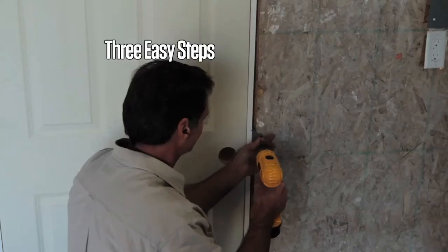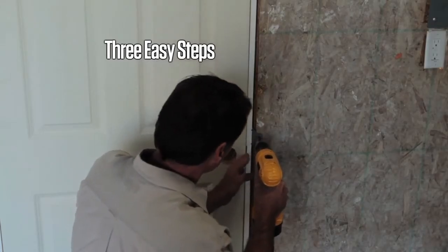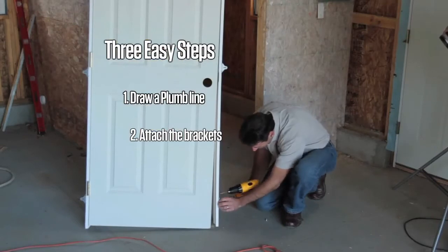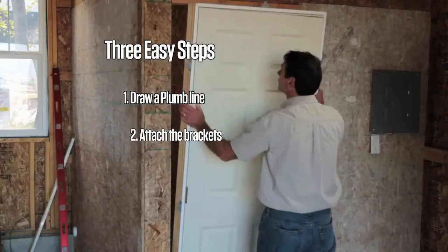The EZ-Hang door installation system has three simple steps. First, draw a plumb line. Second, attach the brackets to the back of the jam. Third, hang the door.